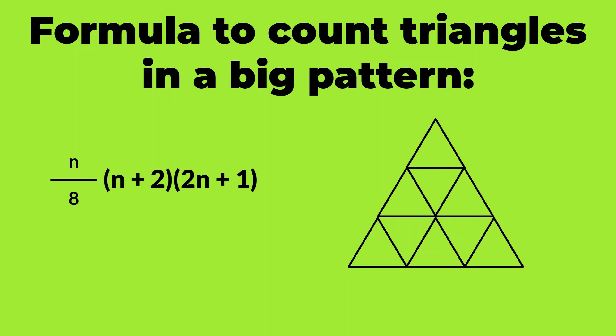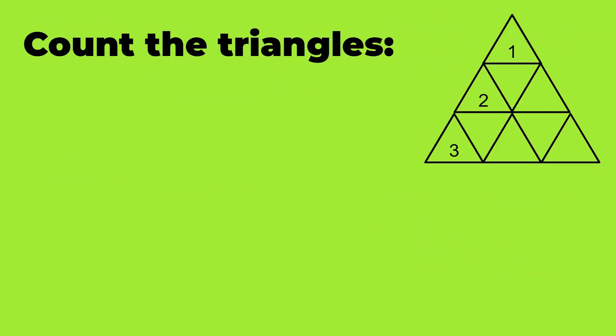So n divided by 8 times n plus 2 times 2n plus 1 and we will implement it here, which has 3 rows. And you must note that the triangle should always be in this type of pattern only. That is, the number of triangles per row increases by 2.